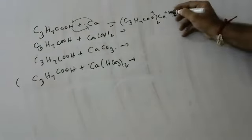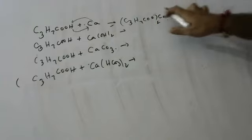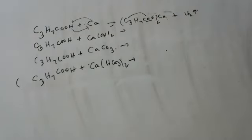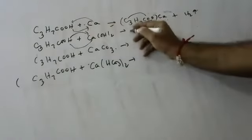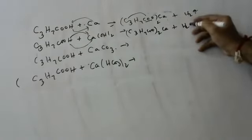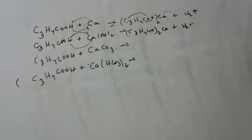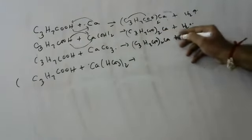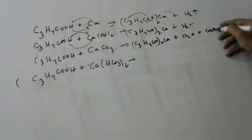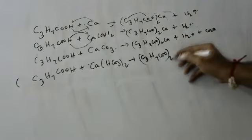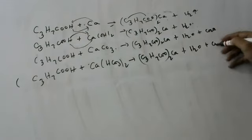So C3H7COOH reacts with calcium: calcium takes the COO group, forming calcium butyrate (C3H7COO)2Ca plus H2. With calcium hydroxide as base: (C3H7COO)2Ca plus H2O. With calcium carbonate: (C3H7COO)2Ca plus H2O plus CO2 gas. With calcium bicarbonate Ca(HCO3)2: (C3H7COO)2Ca plus H2O plus CO2 gas is also produced.